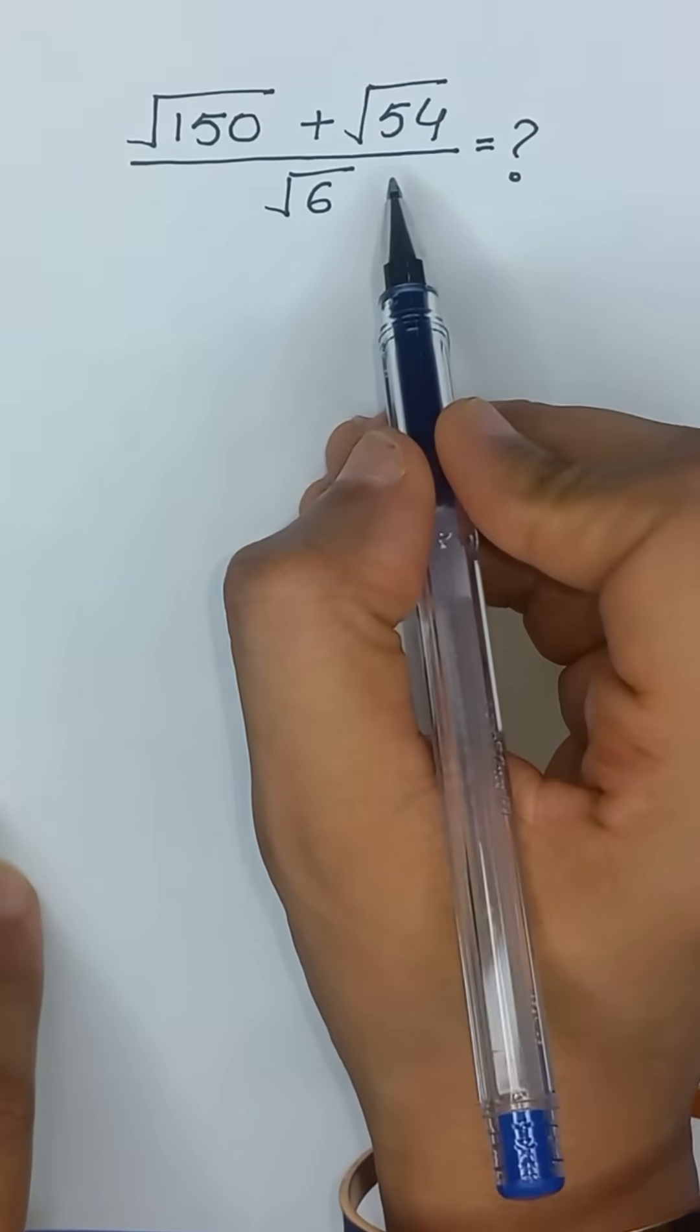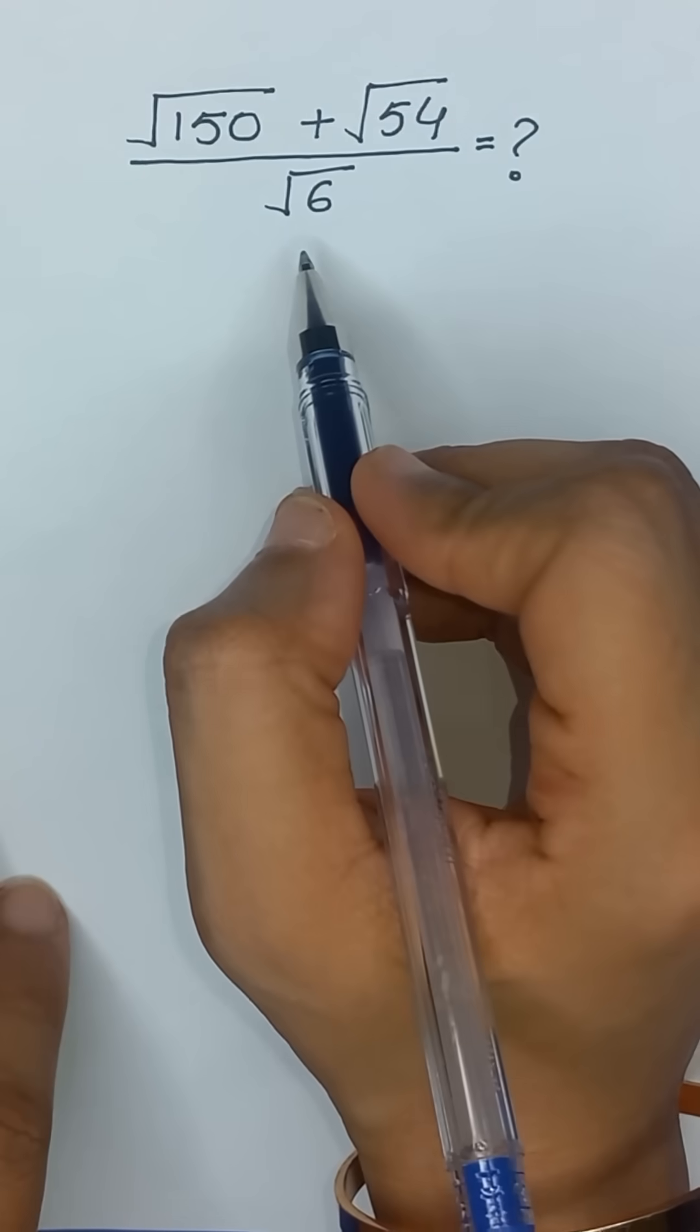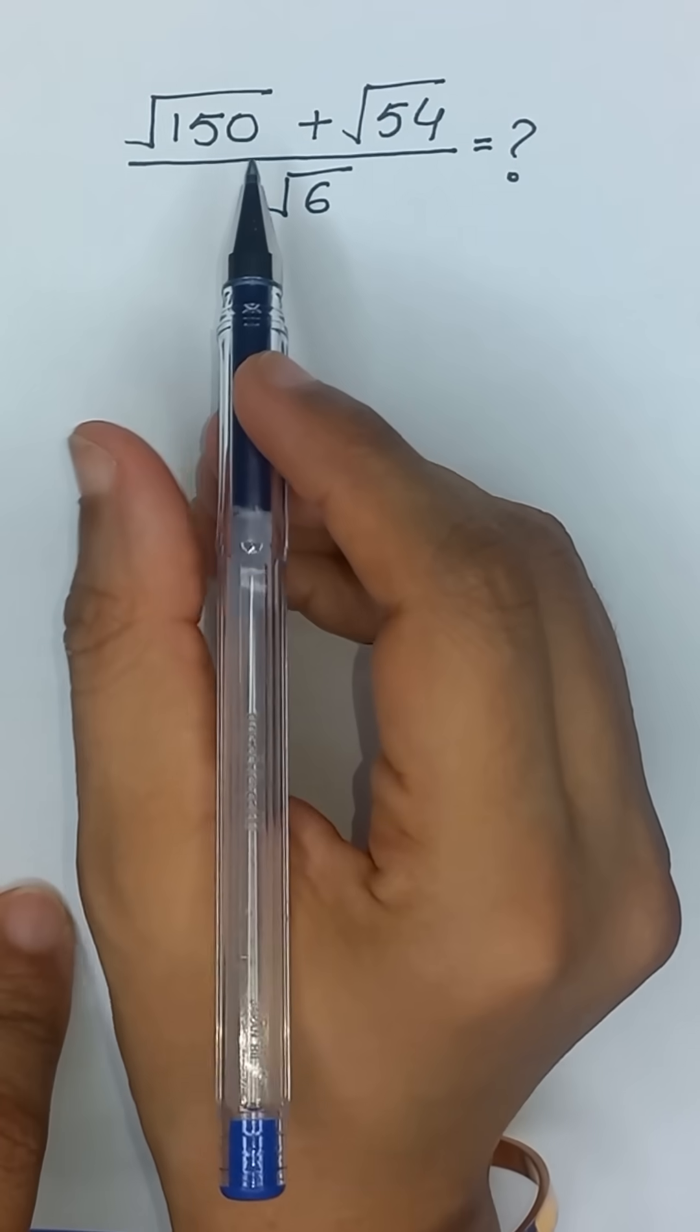Square root of 150 plus square root of 54 divided by square root of 6.